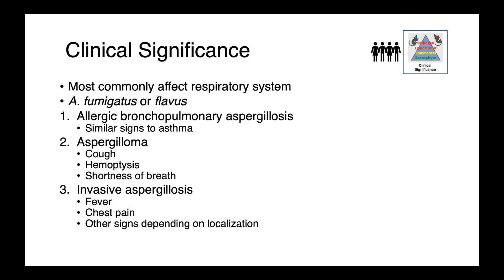In people, we see Aspergillus most commonly affecting the respiratory system, and the most common species are fumigatus and flavus. There are a few key syndromes: allergic bronchopulmonary aspergillosis, which is similar to asthma; aspergilloma, a sort of fungal ball — people with this will be coughing, have hemoptysis, and perhaps shortness of breath.